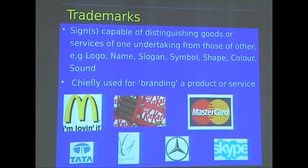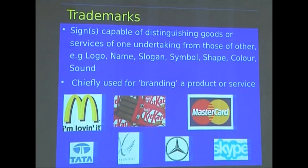Trademark is for signs capable of distinguishing goods or services of one undertaking from those of another. It can be accorded to a logo, name, slogan, symbol, shape, colour, or sound. Examples include McDonald's, Kit Kat, and MasterCard — where the orange and yellow colour alone tells you it is a MasterCard. Closer to home, Techfest — IIT Bombay's famous student technical festival — has been given a trademark. IIT Bombay files many trademarks for various activities.